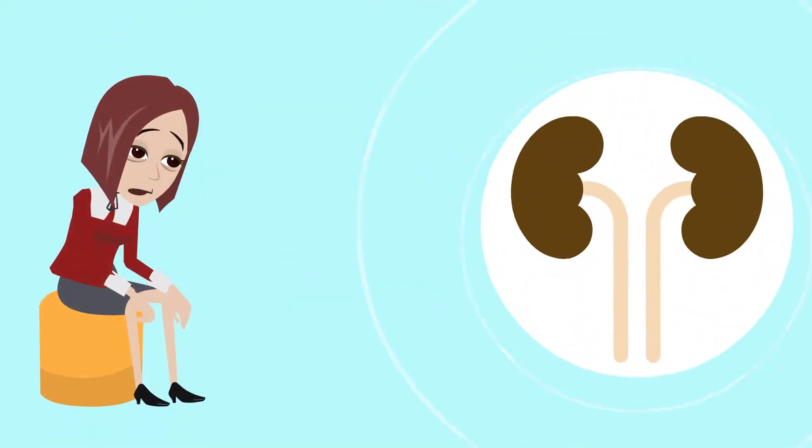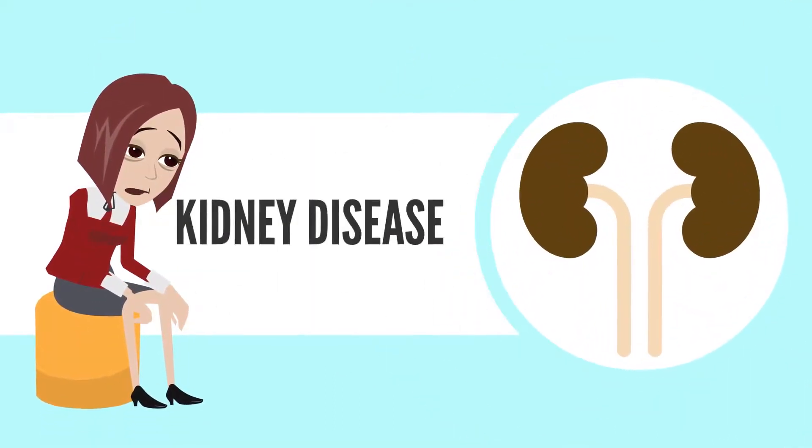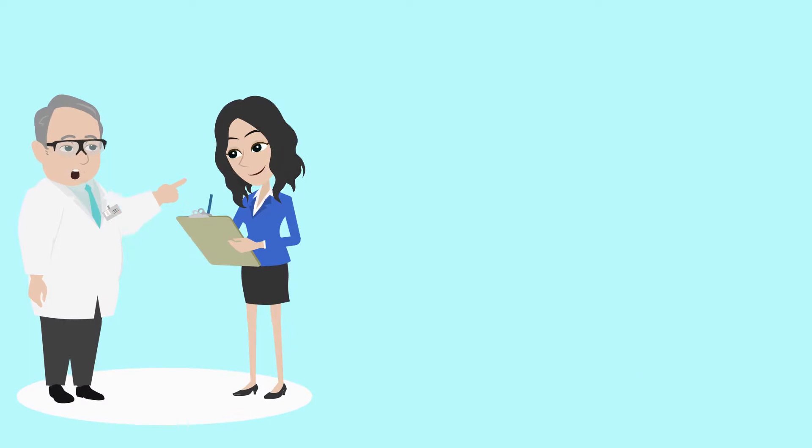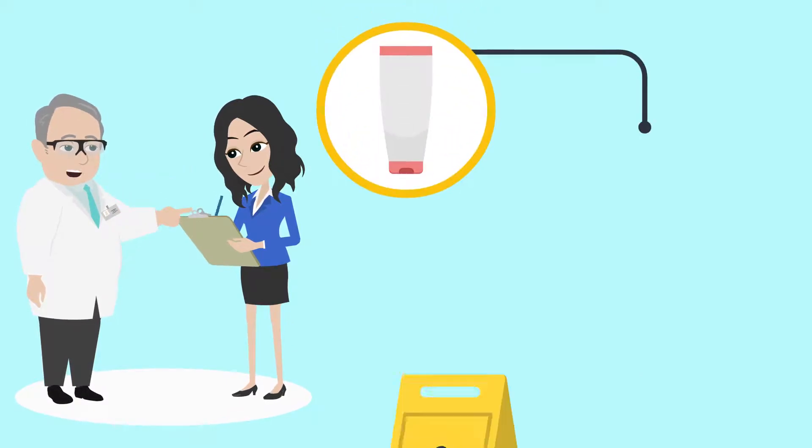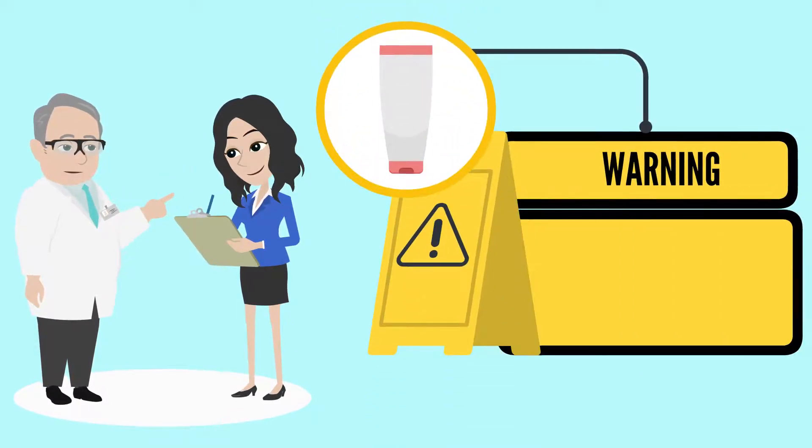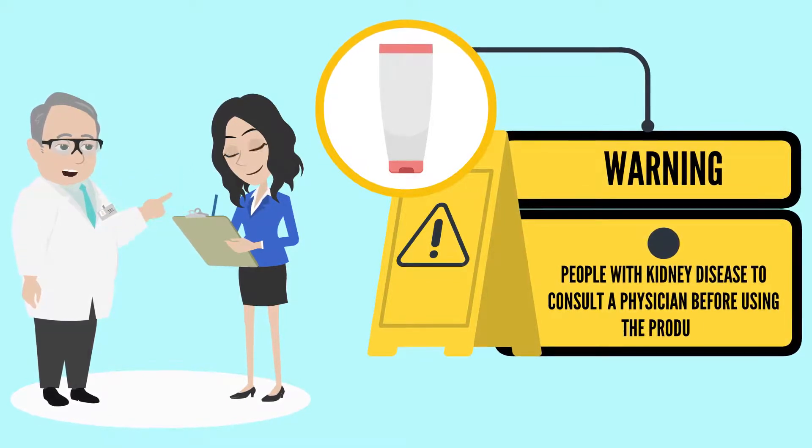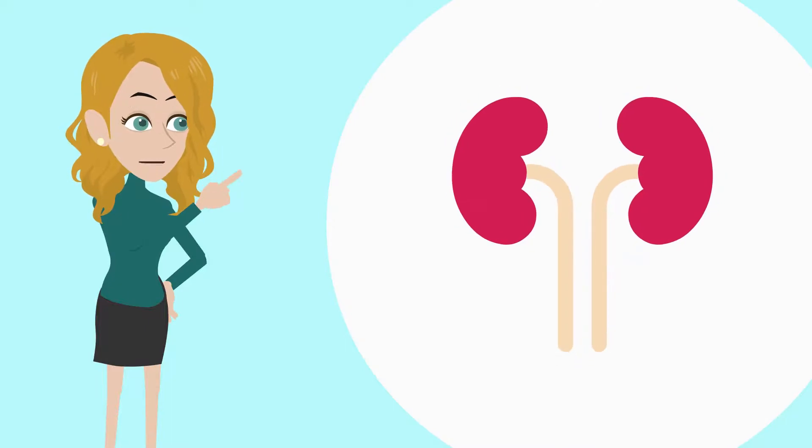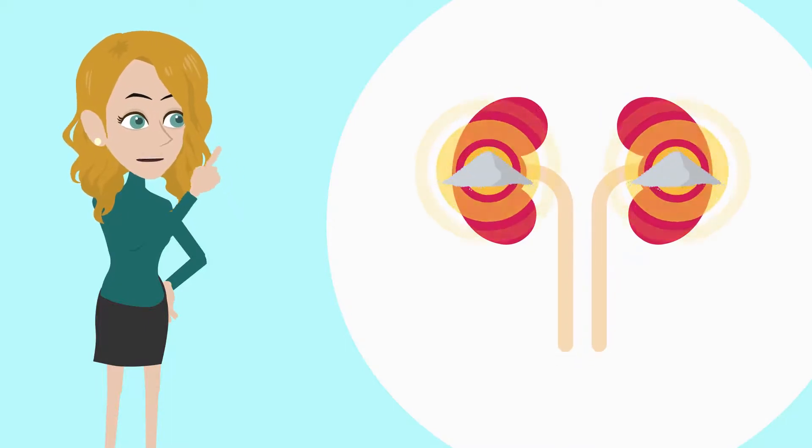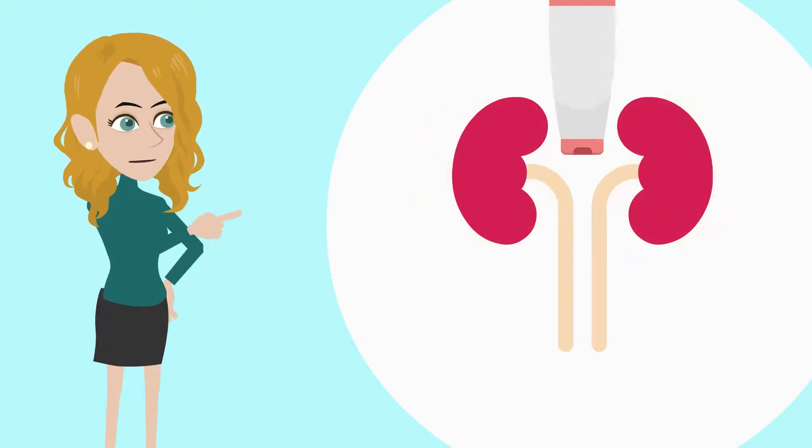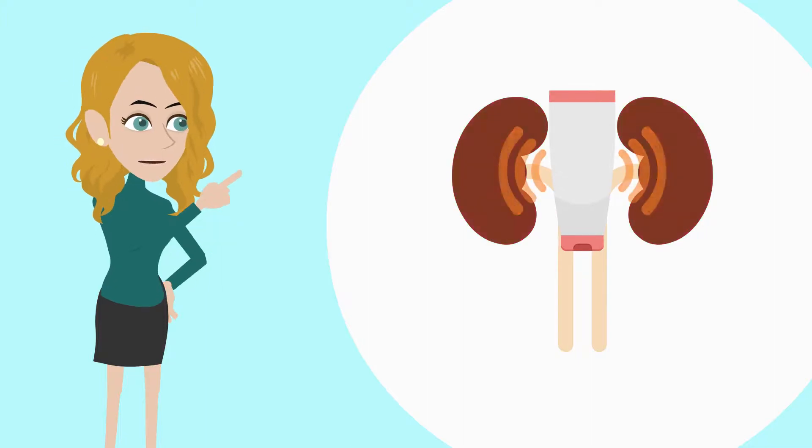It is particularly harmful to anyone with kidney disease. FDA now requires all antiperspirant products to include a warning statement that advises people with kidney disease to consult a physician before using the product. This is because the kidneys play a large role in eliminating aluminum from the body, and exposure to aluminum from the use of antiperspirants might make the condition worse.